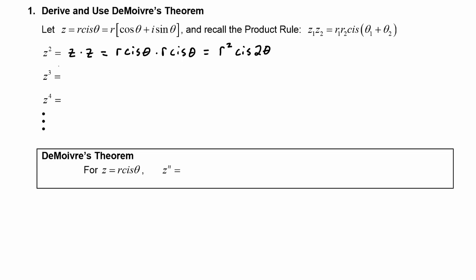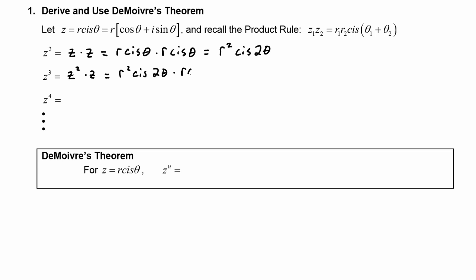Now we use that result to find z to the third. We can think of z to the third as z squared times z, so that is r squared cis two theta times r cis theta. Applying the product rule again, we multiply the radii: r squared times r gives r cubed. Then cis of the sum of the two angles: two theta plus theta gives three theta.